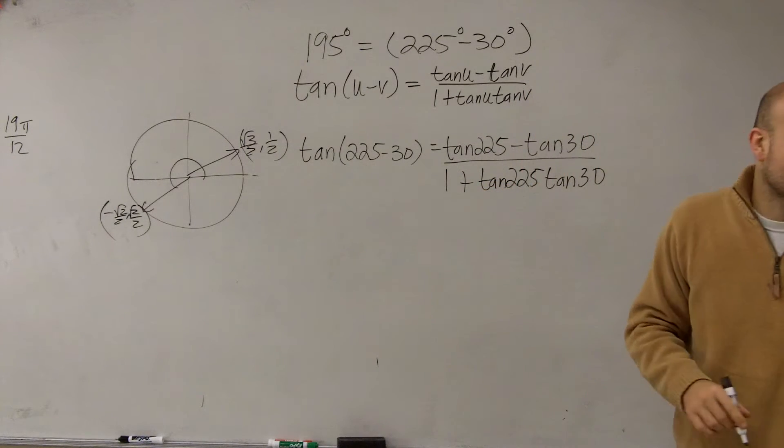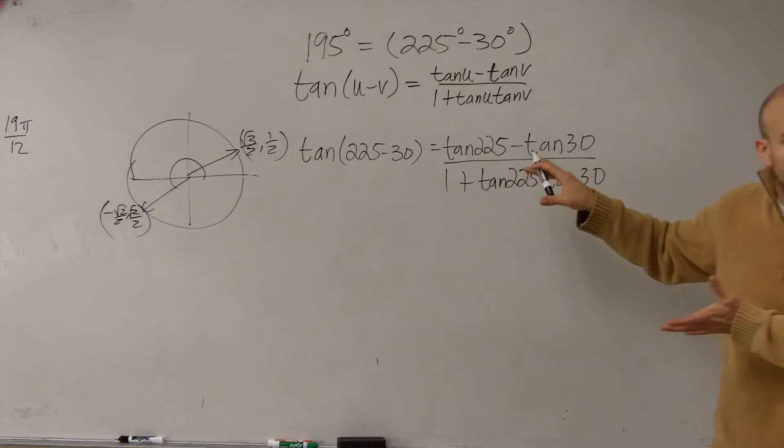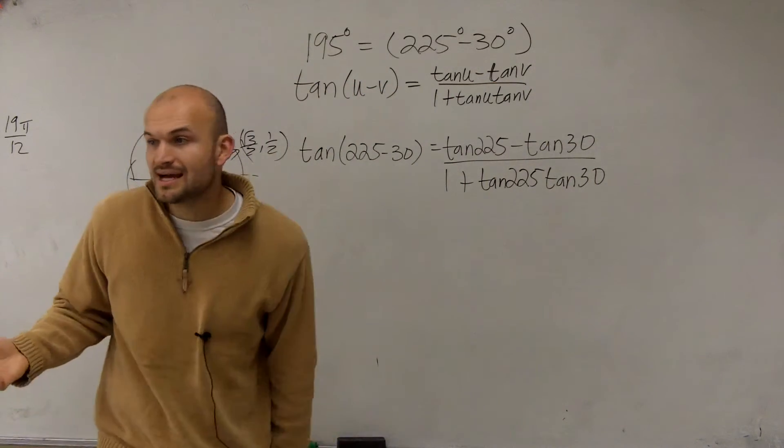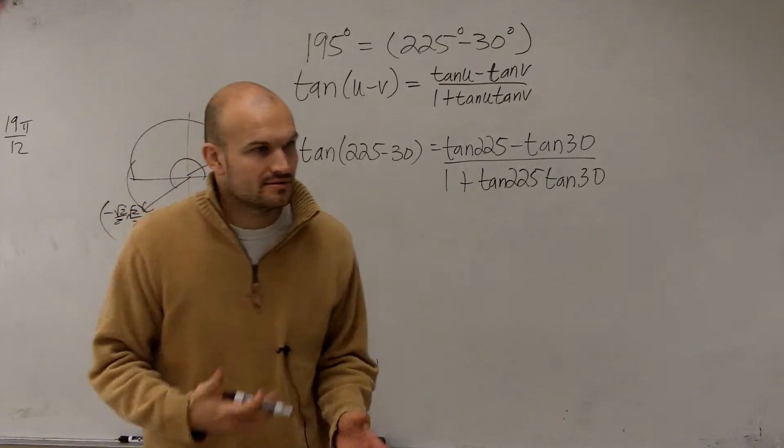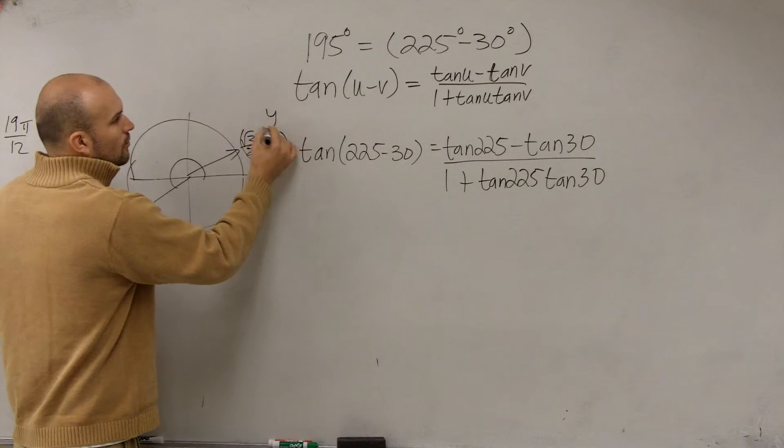So tangent of 225, oh actually never mind. We actually, let's go through this. So we'll have tangent of 225 minus the tangent of 30 divided by 1 plus tangent of 225 times tangent of 30. Now, you guys aren't going to have to write all of this stuff out, but I just want you to see it so you can see how I'm applying this stuff in there.